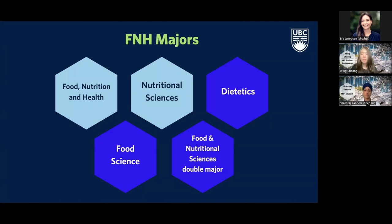Next, the food science major is for those interested in the chemistry, microbiology, and biological components of food, or how to engineer food to be more pesticide or foodborne disease resistant. Dr. Hingston and alumni Felicia will share more about their experiences with food science. Lastly, if you're interested in both the science of human nutrition and food engineering, you might consider the food and nutritional science double major, where you get to explore both realms.